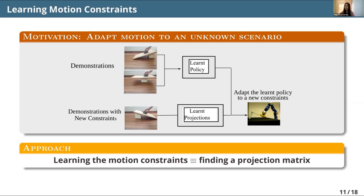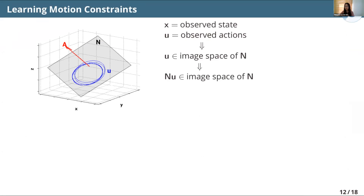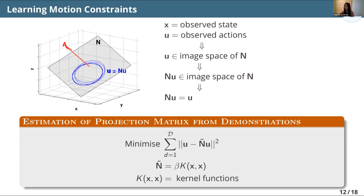Our idea is to express the adaptation as a kind of constraint and find a projection matrix that performs this adaptation. In a simple three-dimensional toy example, we have a table surface with a human demonstration making a circular motion on that surface. You can imagine an observation lying in the image space of some projection matrix. We don't know what that projection matrix is. We come up with an error functional and figure out what projection matrix achieves this motion. Previously we formulated this as a kernel regression problem, though other supervised learning algorithms would work as well.